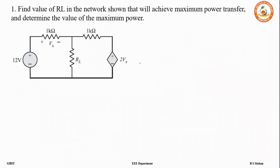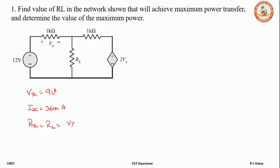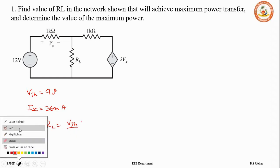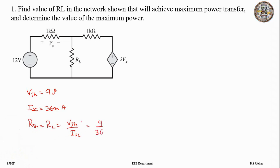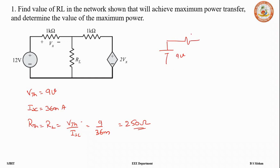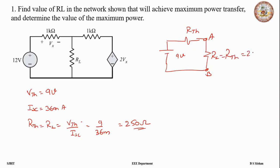We have solved for VTH = 9 V and ISC = 36 mA. The value of RTH is equal to the value of RL for maximum power, and RTH = VTH / ISC = 9 / 36 mA = 250 ohms. So the Thevenin equivalent circuit has VTH = 9 V and RTH = 250 ohms across A and B. The load RL = RTH = 250 ohms, and only at this value do we get maximum power.